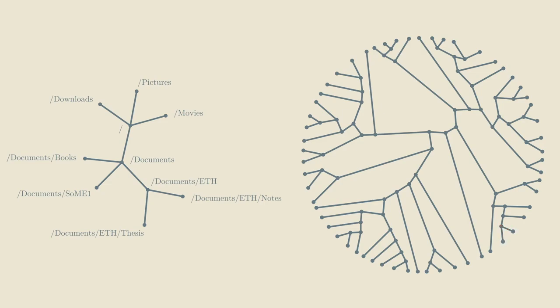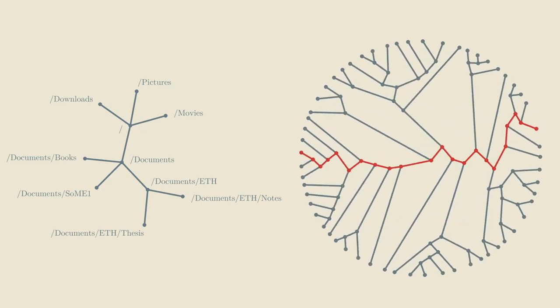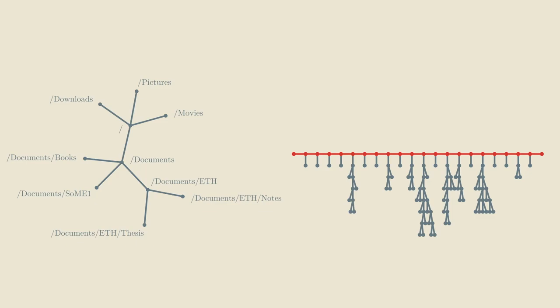When you get your hands on a tree that's so large that you can't just view it, like the full file system tree which can have millions of nodes, you would like to know at least some of its basic properties. The first question you might ask is how big is it? That's easy to answer, you can just count the number of nodes in the tree. But the next question you could ask, which is already much more interesting, is how long is it? To answer this question, we want to find the longest possible path in the tree. Its length is also called the diameter of the tree.